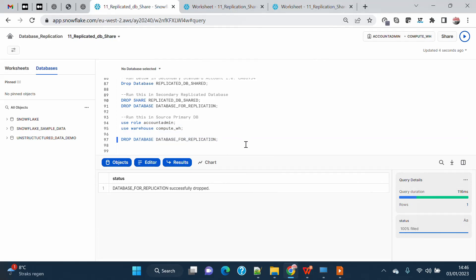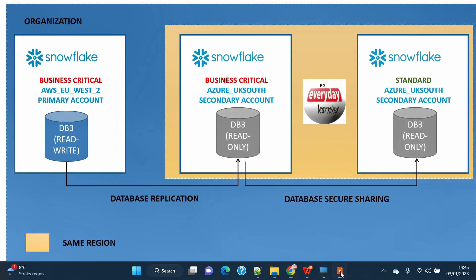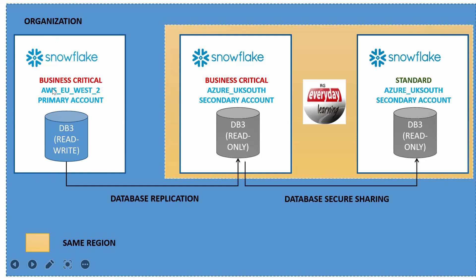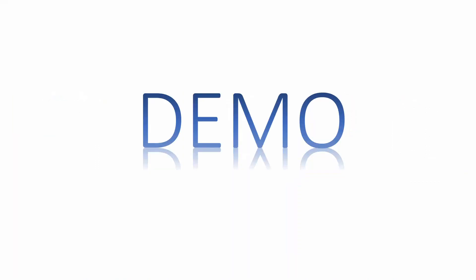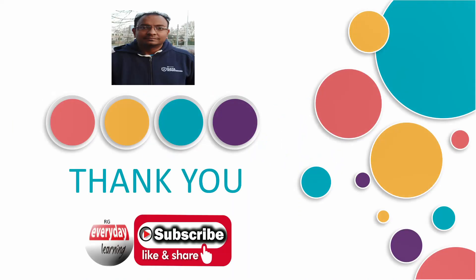That's all for the end-to-end demo. We replicated from a primary Business Critical account in AWS Europe region to Azure UK South in a secondary account across different regions, then shared the database in the same region from a higher edition account to a lower edition account, and we were still able to query the data. Hope you liked this demo — if you did, please subscribe to my channel and like this video. Thank you.